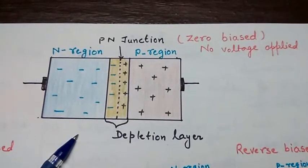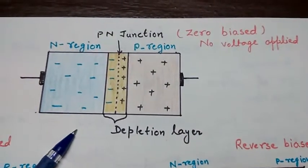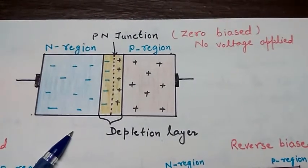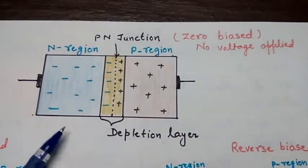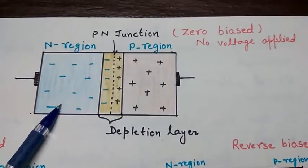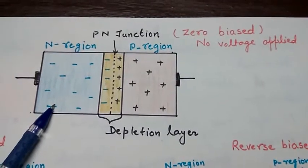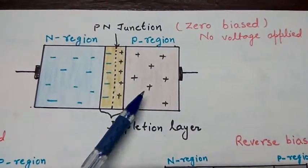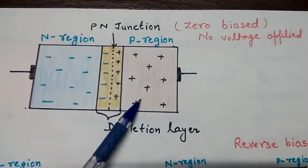A diode is constructed from two semiconductor materials which are doped in different proportions. Doping means mixing of materials. These materials are P-type and N-type. N-type material has an excess of electrons and works as a donor, whereas P-type material has a deficiency of them, symbolized as holes.